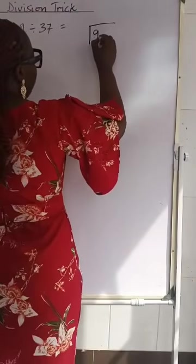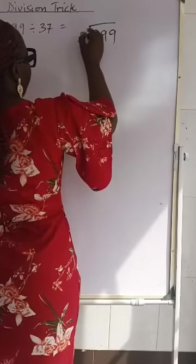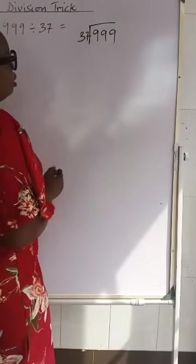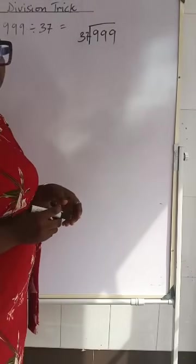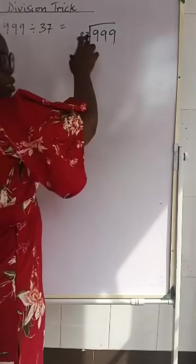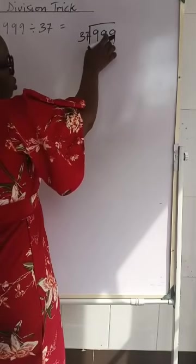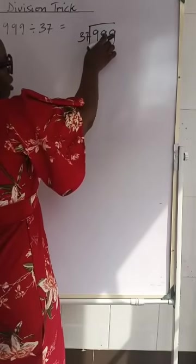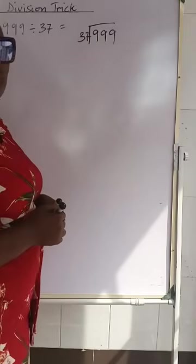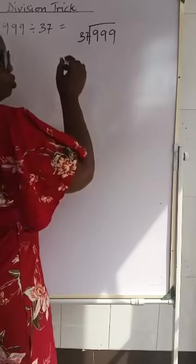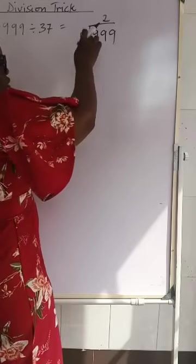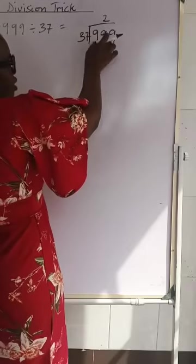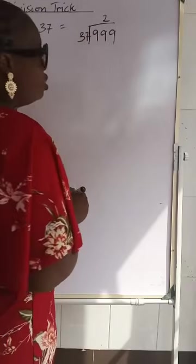We have our dividend here and our divisor this way. 37 going into 9 cannot go because 9 is smaller than 37, so we use the 99. How many times will 37 go into 99? It will go twice. So we put the 2 above the line, the second line, because it's not this one that divided, rather the two. So we are going to now multiply.